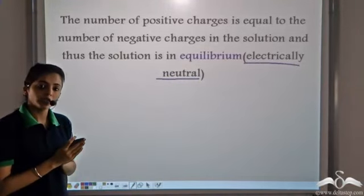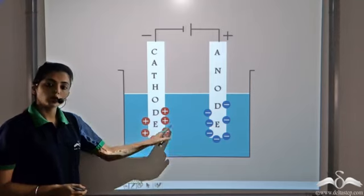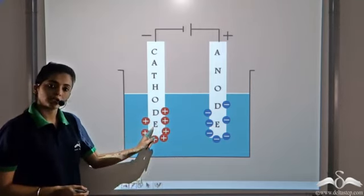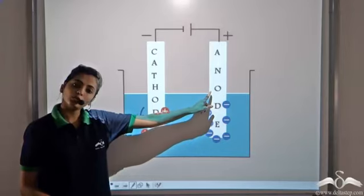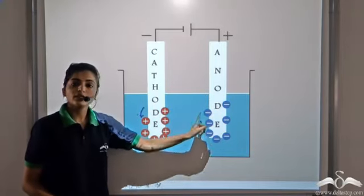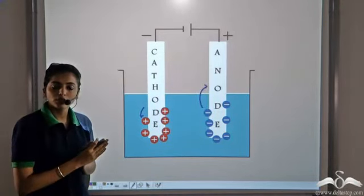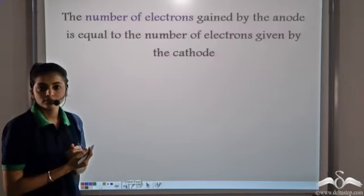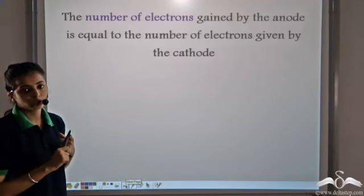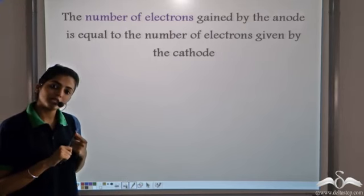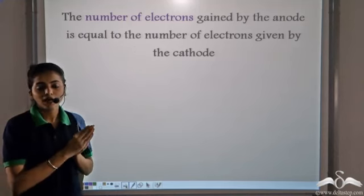The electrolytic solution is always in a state of equilibrium, meaning it is always electrically neutral. The cations migrate towards the cathode, and in order to become neutral, they take electrons from the cathode. The anions migrate towards the anode and give away their electrons to it. Since the total positive charges equal the negative charges, the number of electrons gained at the anode always equals the number of electrons lost at the cathode.